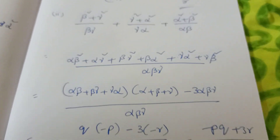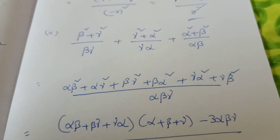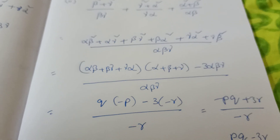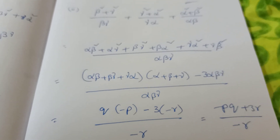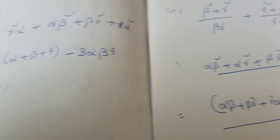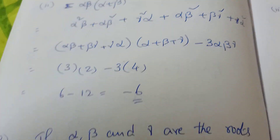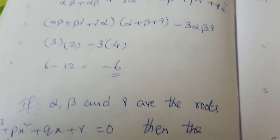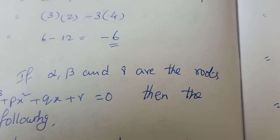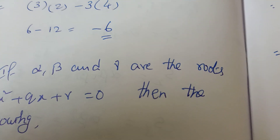Understood? Alpha, Beta, Gamma — sum of the roots, how to find — these are the tips. Next exercise you will meet in the next video. Thank you for watching my channel, and please share this video also.